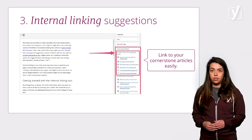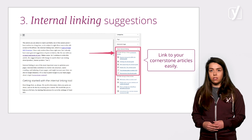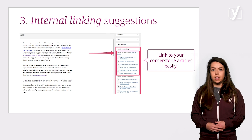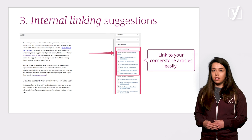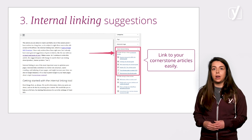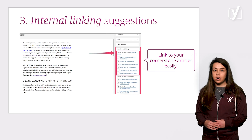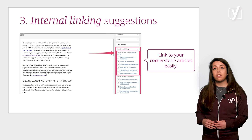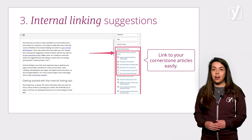Third, the internal linking suggestions. In Yoast SEO Premium, we offer an internal linking functionality. This means we analyze the text you are writing and use the prominent words in that text to determine which of your articles are of a similar topic, because these are the articles you should be linking to. We show these suggested articles in a list next to the editor, so you can easily add links while writing. Cornerstone articles are treated differently in our calculation — they are more important and will receive a higher value, and we place them at the top of the list of internal linking suggestions to make it much easier for you to link to your key articles.